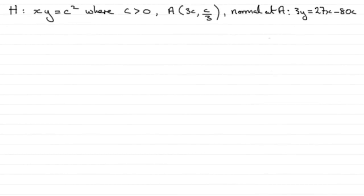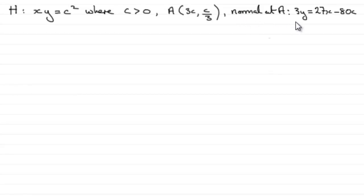For this part of the question, we've got the point A on the hyperbola H with coordinates 3C, C over 3. And we've got to show that the normal at A is given by the equation 3Y equals 27X minus 80C.